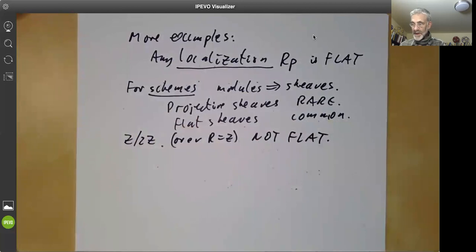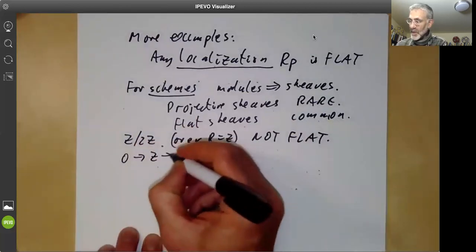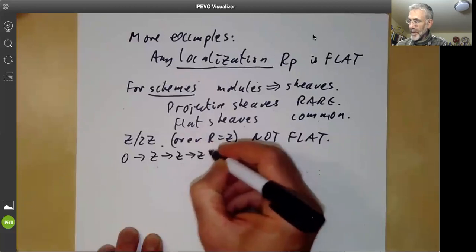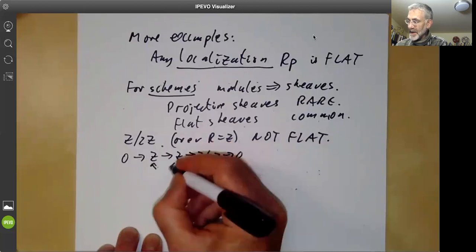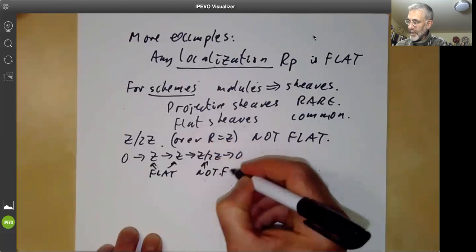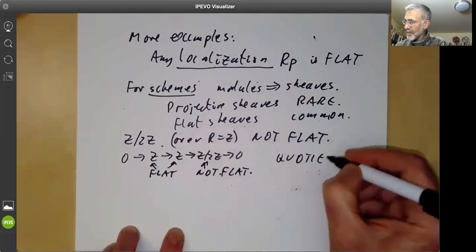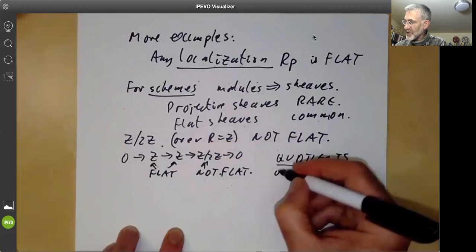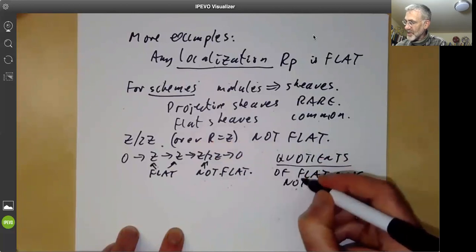You can also ask, are submodules or quotients of flat modules flat? And the answer is they're usually not. So here we have the exact sequence, and here these are flat, and this is not flat. So quotients of flat modules need not be flat in general.